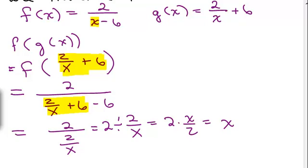So if f of g of x equals x, then they are inverses of each other. Now you could have also computed g of f of x and you should also get that the answer is x. So let's do that.